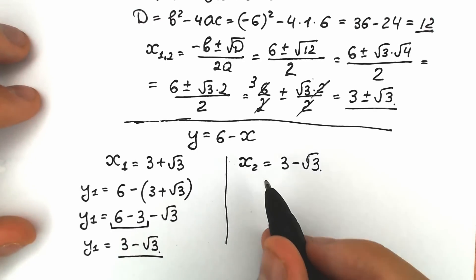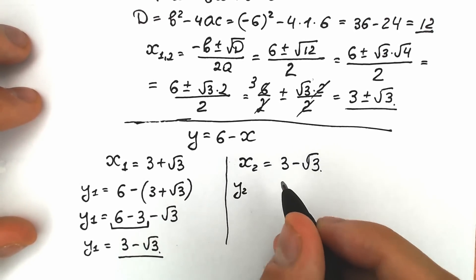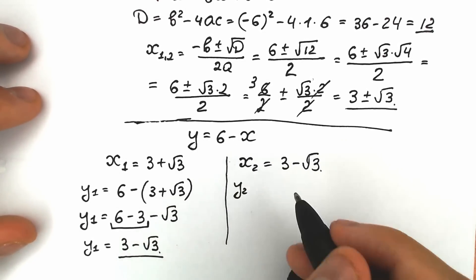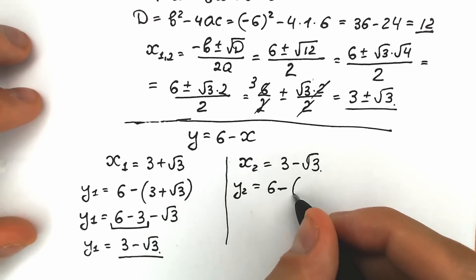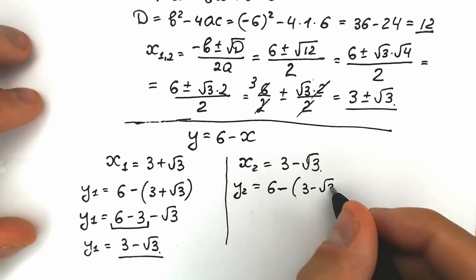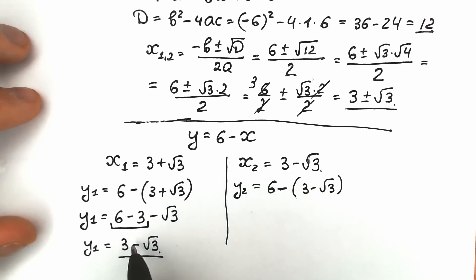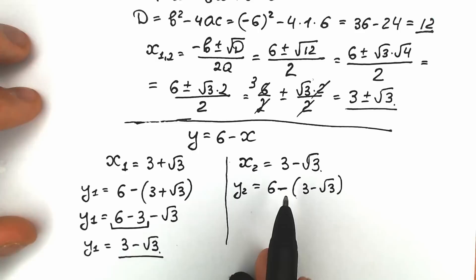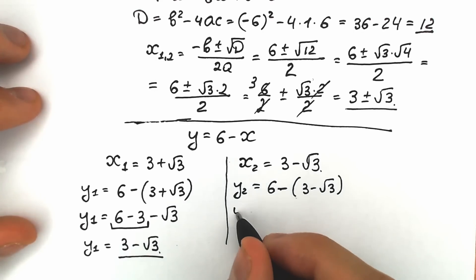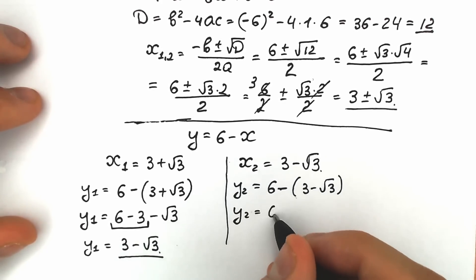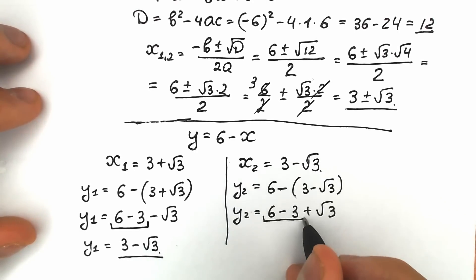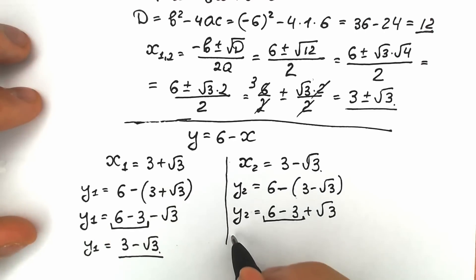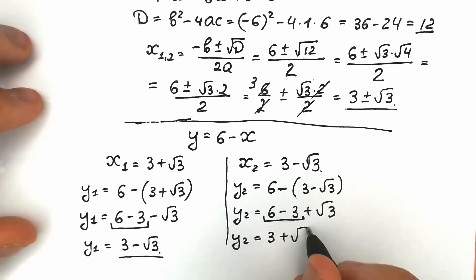Now let's do the same for y₂. We plug x₂ equals 3 minus square root of 3 into y equals 6 minus x. So y₂ equals 6 minus (3 minus square root of 3), which gives 6 minus 3 plus square root of 3. Since 6 minus 3 equals 3, y₂ equals 3 plus square root of 3.